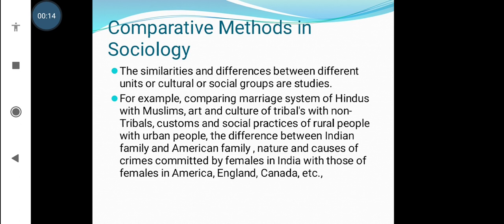Comparative method studies the similarities and differences between different units, cultural or social groups. For example, comparing the marriage system of Hindus with Muslims, art and culture of tribals with non-tribals, customs and social practices of rural people with urban people, the difference between Indian family and American family, and the nature and causes of crime committed by females in India compared to those in America, England, Canada, etc.